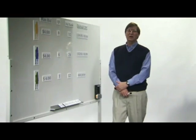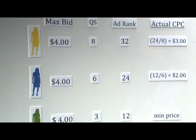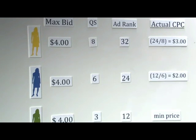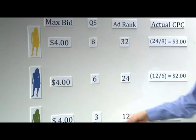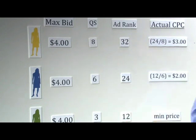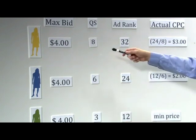Let's see how this works in a slightly more complicated example. Here we've got three advertisers, and they're each bidding the same price. The max bid is $4 for each of them, but they have different qualities. In this case, the quality is 8, 6, and 3. The ad rank is determined by multiplying the bid times the quality.